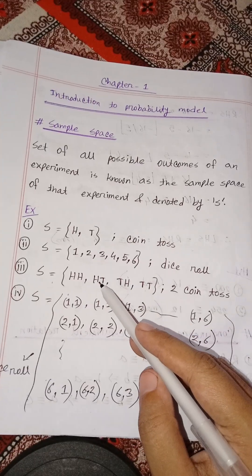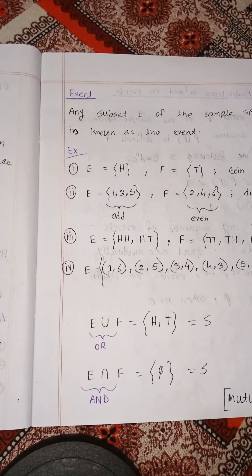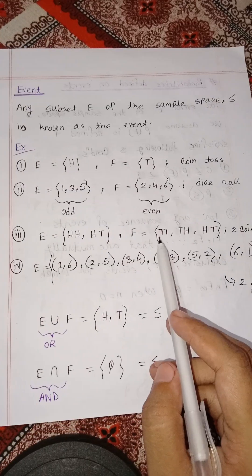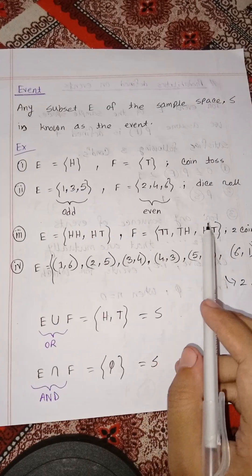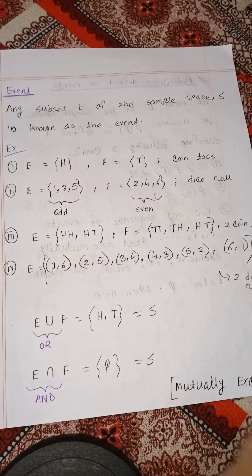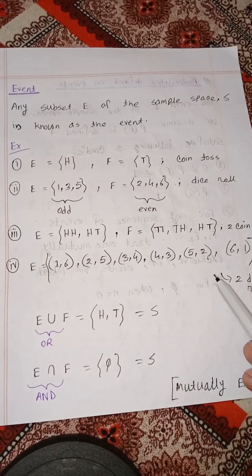The second event includes t,t and h,t and t,h — that is, outcomes with at least one tail.